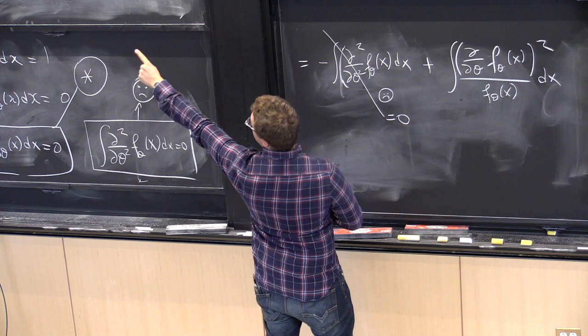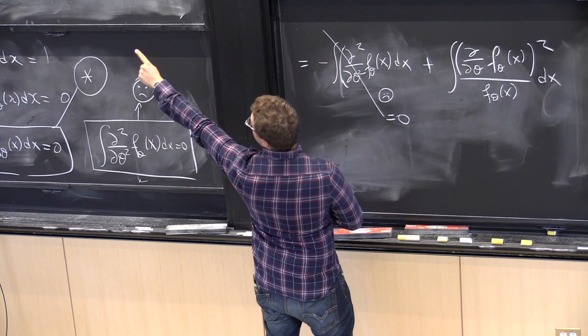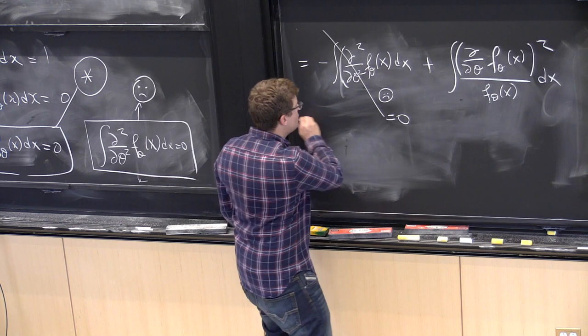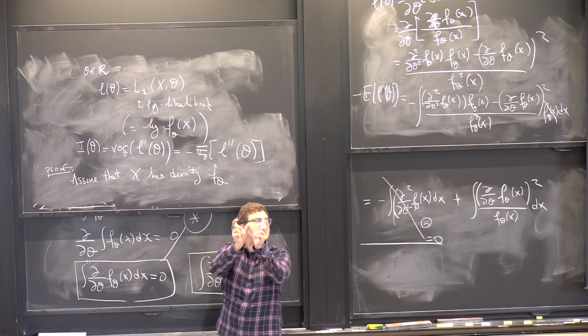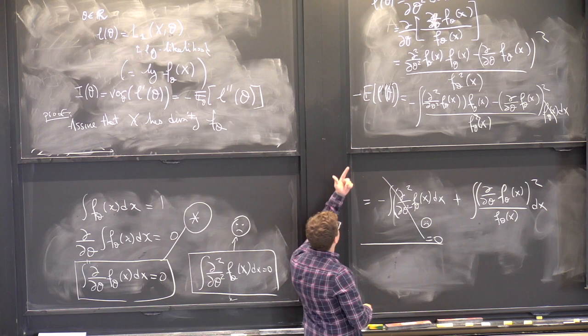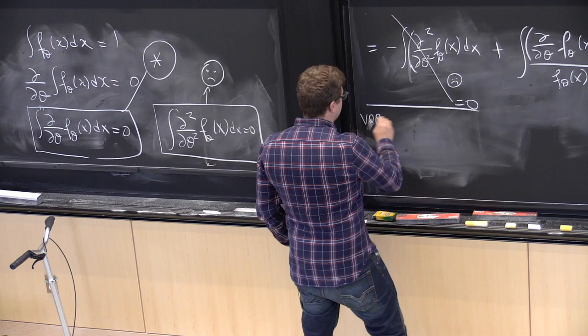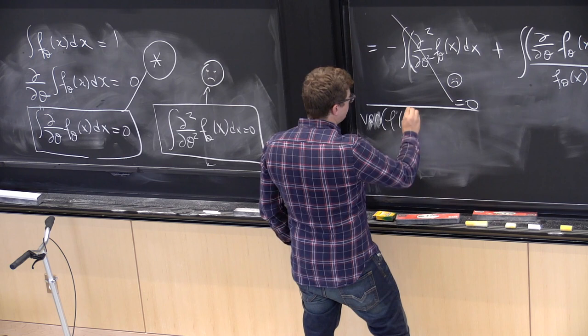So I've proved that negative expectation of L double prime equals a certain expression. Now I need to show that this equals the variance of L prime of theta. Let's work from the other side. The variance of L prime of theta equals the expectation of L prime squared minus the square of the expectation of L prime.